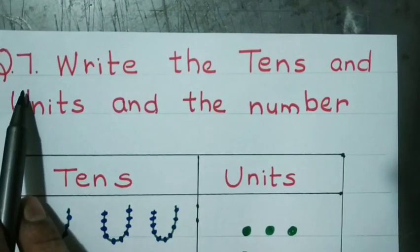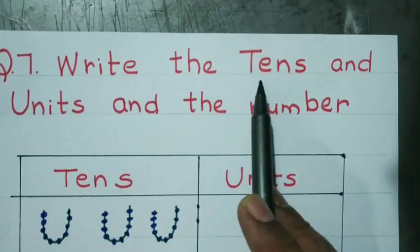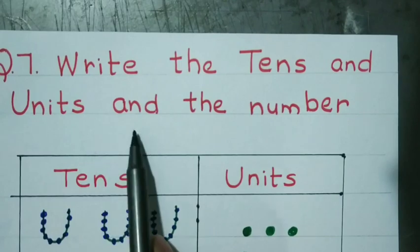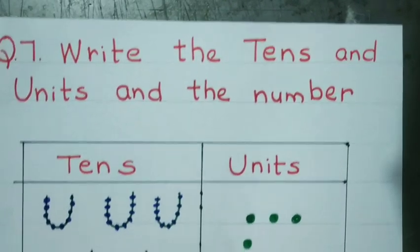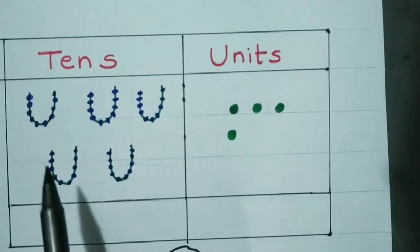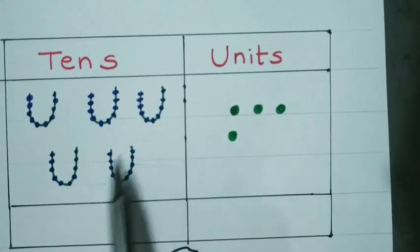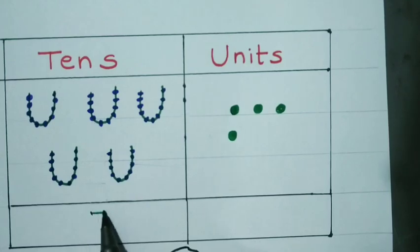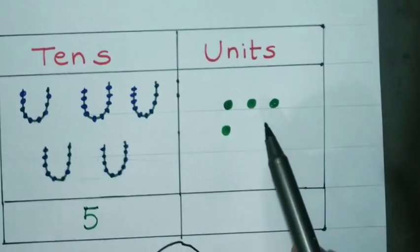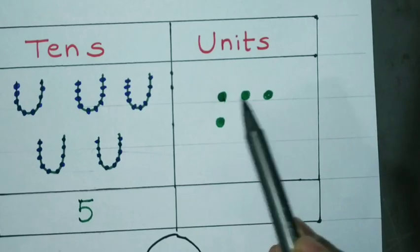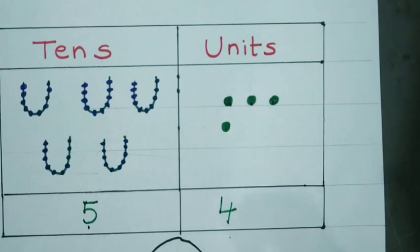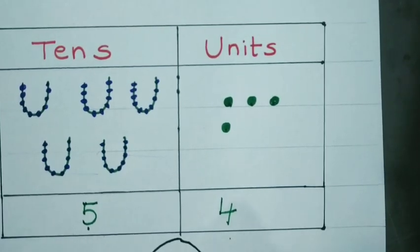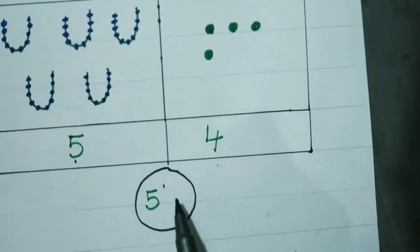Question number 7: Write the tens and units and the number. Count the tens: 1, 2, 3, 4, 5 — so 5 tens. Count the units: 1, 2, 3, 4 — so 4 units. The number is 54.